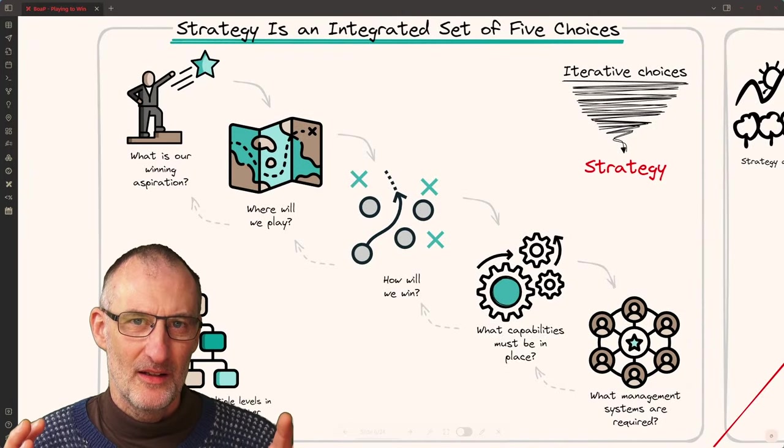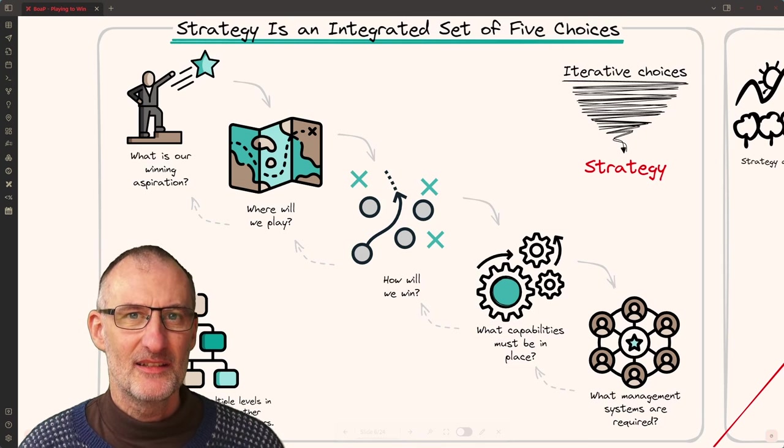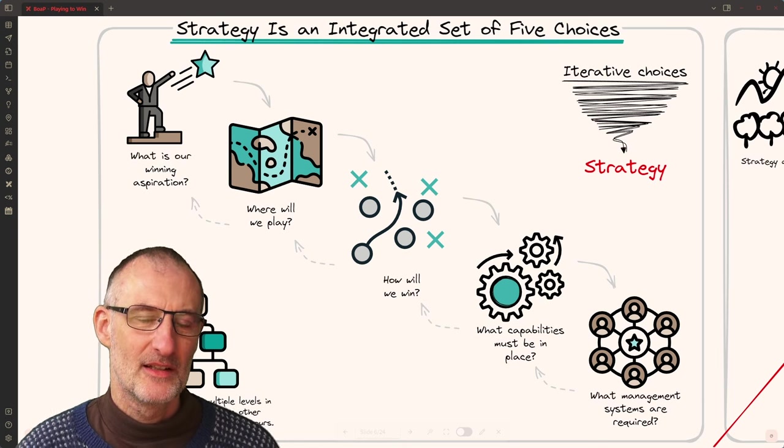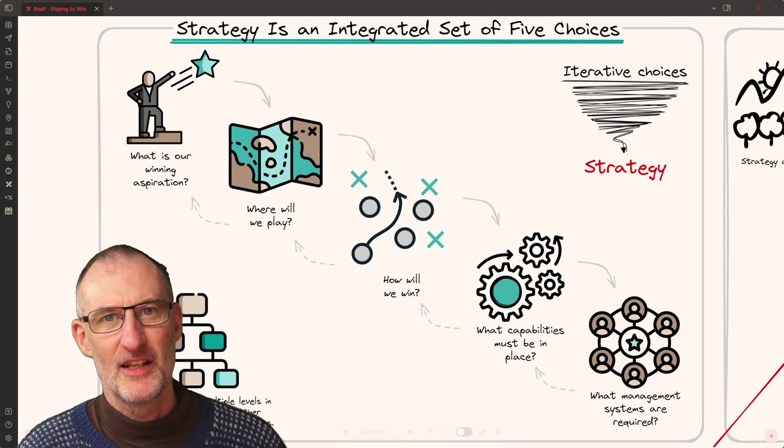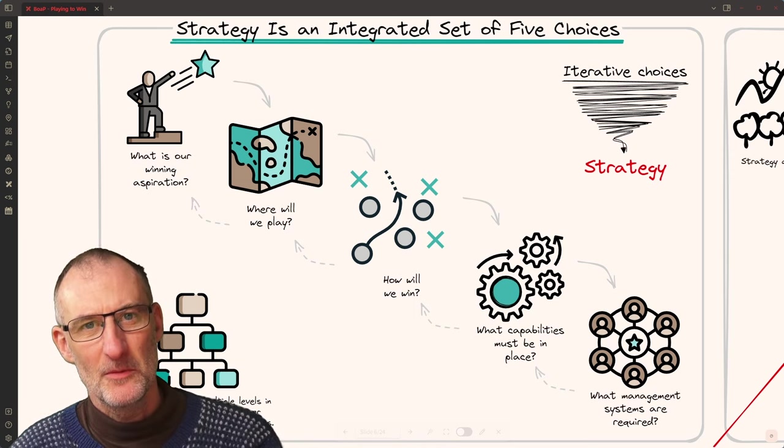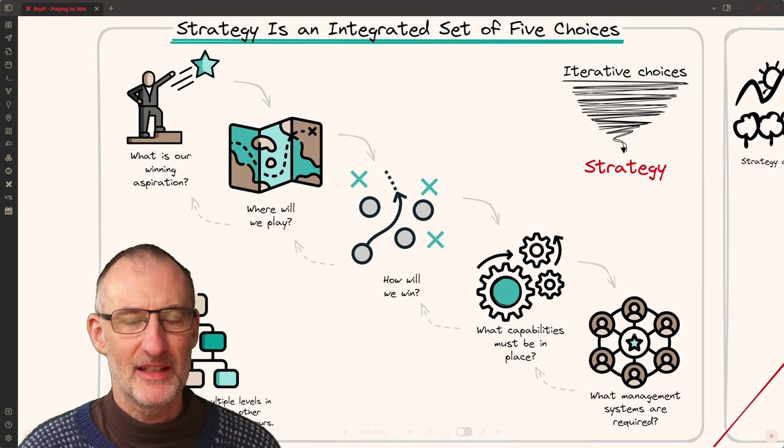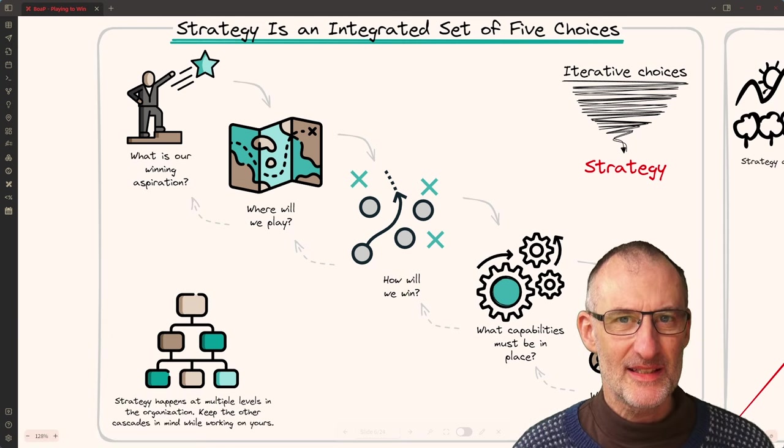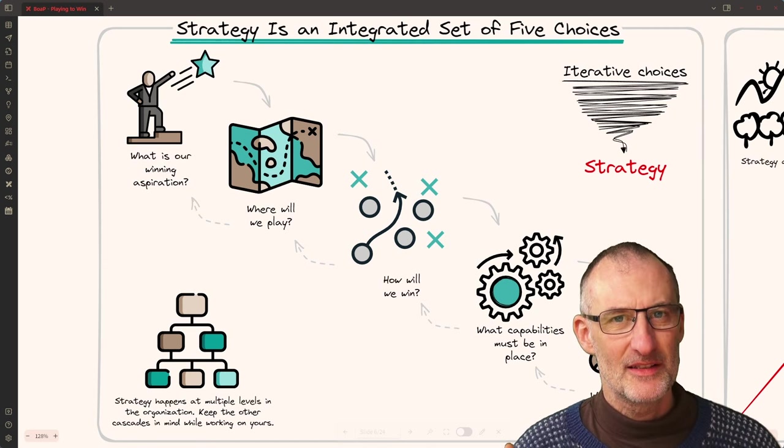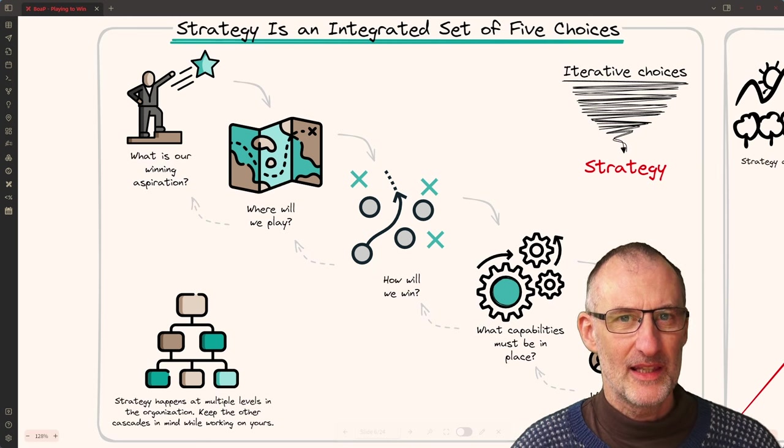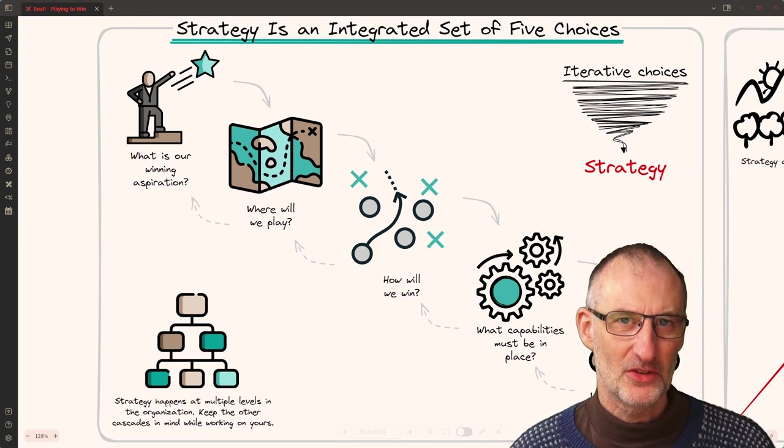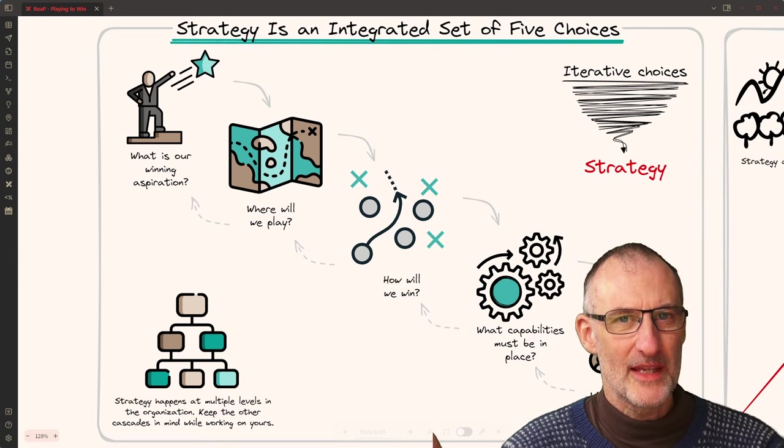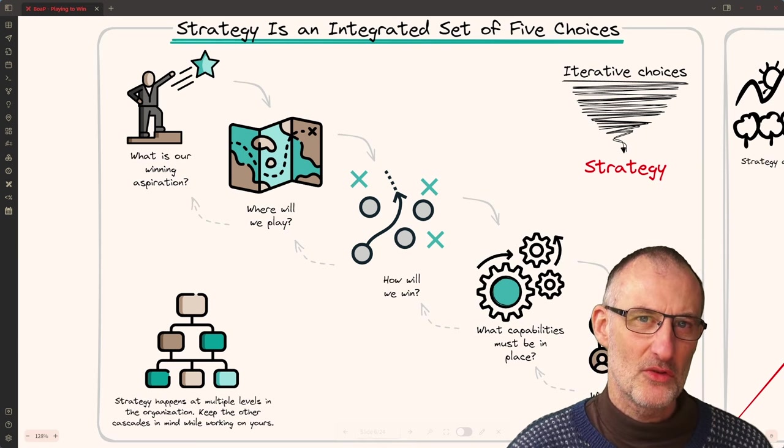So in the book Roger talks about the strategic cascade and essentially according to Roger strategy is an integrated and coordinated set of five choices starting with defining your winning aspirations then talking about where to play, how to play. Once these are defined you can move on to talk about core capabilities and finally the management systems that will help you keep on track with your strategy. And as you can see from the arrows here and from the spiral in the top right, strategy is an iterative process. It's about thinking about one aspect of the strategy and then revisiting another part of your strategy making sure that these parts play in concert with each other. It's about choices and as you make your choices you narrow down your options and that's how you come to a strategy.